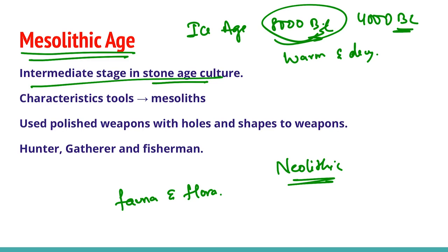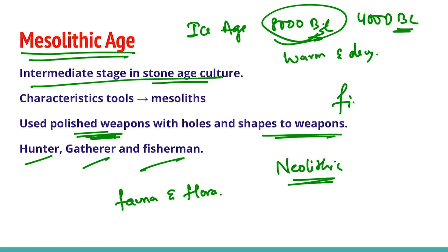In this phase, the man prepared polished weapons with holes and shaped weapons. The Mesolithic man was a hunter, gatherer, and fisherman. He also knew the use of fire — whereas in the Paleolithic age people were not aware of fire, in this age people came to know its use. In this age the people learned to manufacture pots, they became herdsmen, and they also buried the dead bodies.